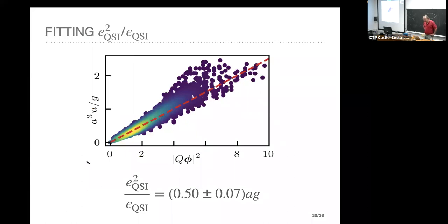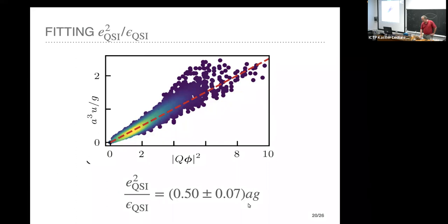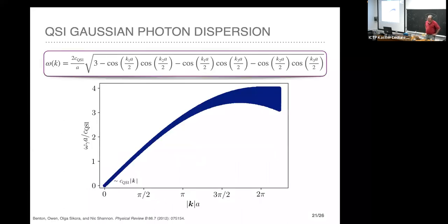Here's what we got: with all different values of the fluxes plotted on the x-axis and energy on the y-axis, and color coding for density of points, most points lie on this line. The width is given by rare outliers. This gives a dimensionful quantity involving the lattice constant and the strength of the ring exchange.